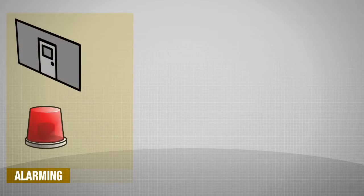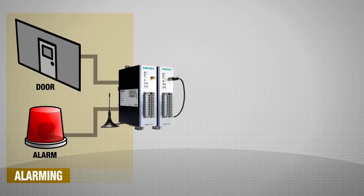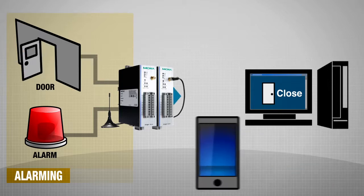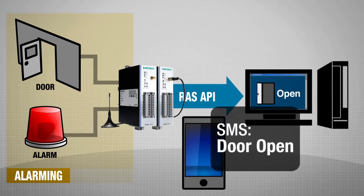To give you a better idea of how all this works to your advantage and how easy it is to use our RTU tool chain, let us take a look at a sample scenario that will allow you to examine three useful APIs: ALARMING, the remote active OPC server service, and SMS.